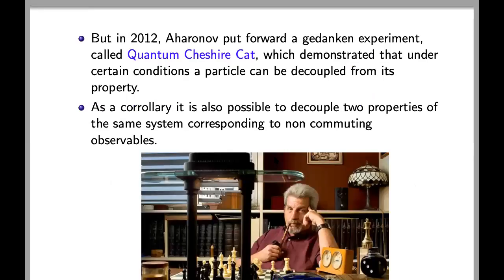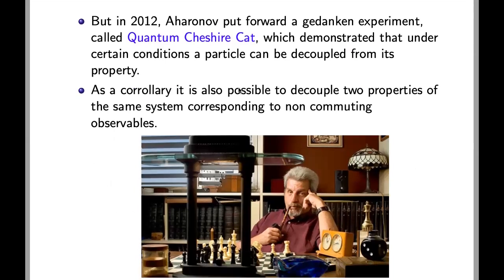But in 2012, Aharanov put forward a Gedanken experiment called Quantum Cheshire Cat which demonstrated that under certain conditions, a particle can be decoupled from its property. As a corollary, it is also possible to decouple two properties of the same system corresponding to non-commuting observables.